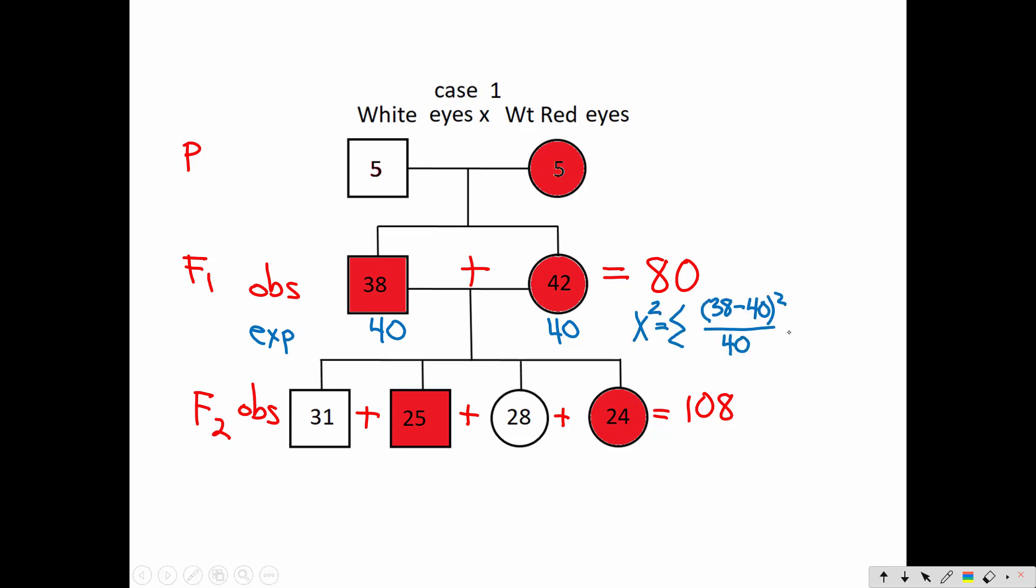So chi-squared is going to be the sum of my first type of offspring, which is the red-eyed males. That's 38 observed minus 40 expected. Square that divided by 40, which was the number I expected. Then I'm going to add to that the second type of offspring, the red-eyed females. I observed 42. I expected 40. Subtract 40 from 42 and square that, then divide it by the number expected, which was 40.